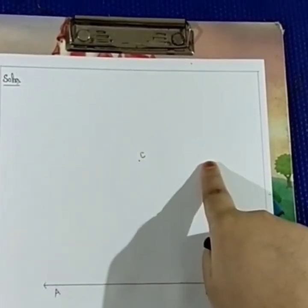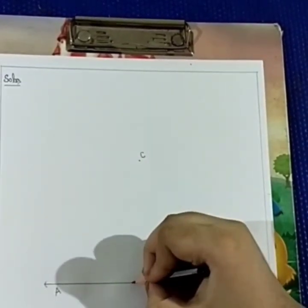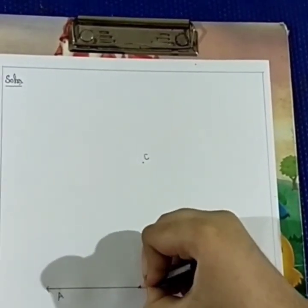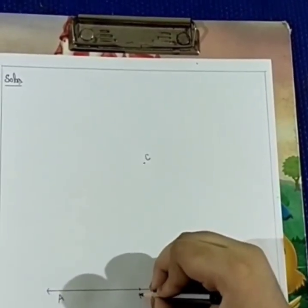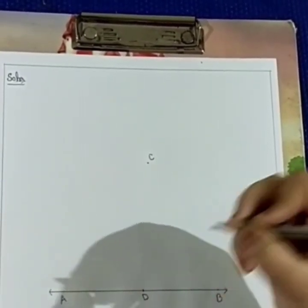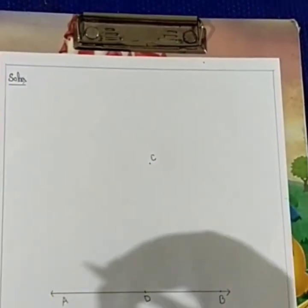So, to draw this line, we will take a point on AB and mark it as D. Now, we have to draw a line.